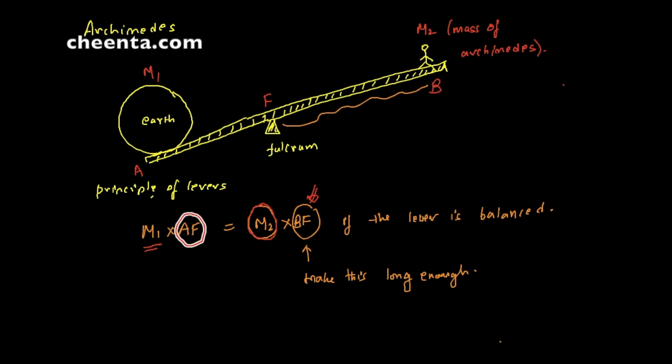So whatever smallness of this mass might be, and however large M1 could be, by making BF sufficiently long or AF sufficiently small, or both, you could balance this lever about the fulcrum. So if it's in the balance position, it would look like this - this is the Earth, this is the man, and this is the fulcrum.